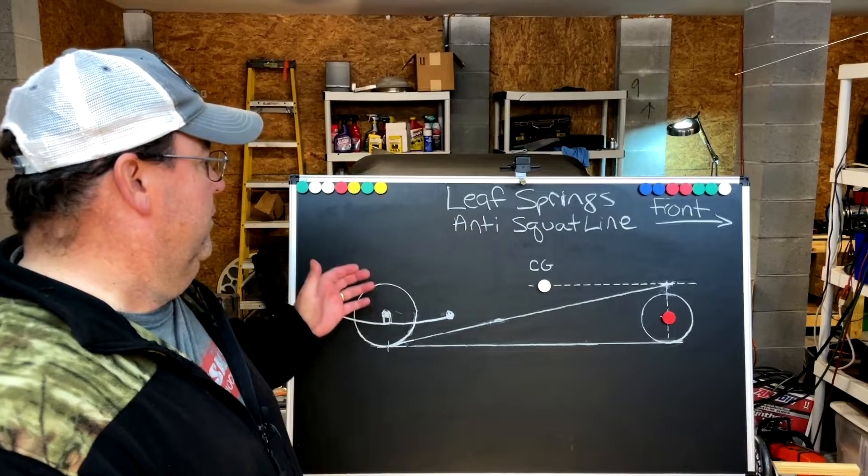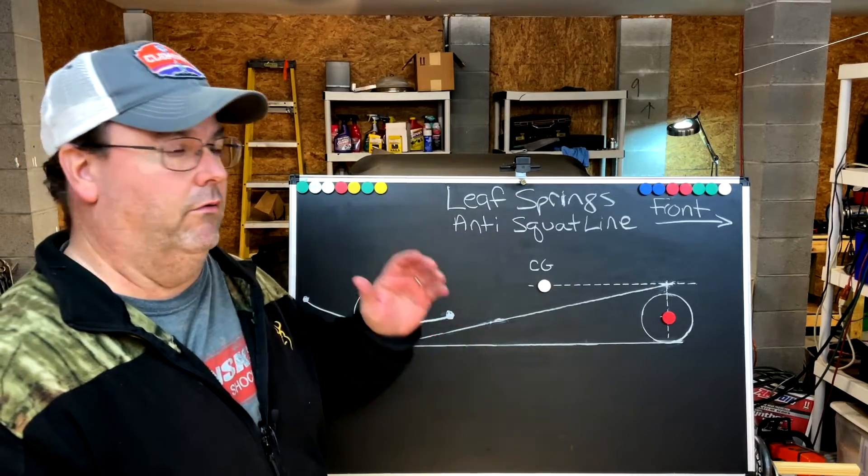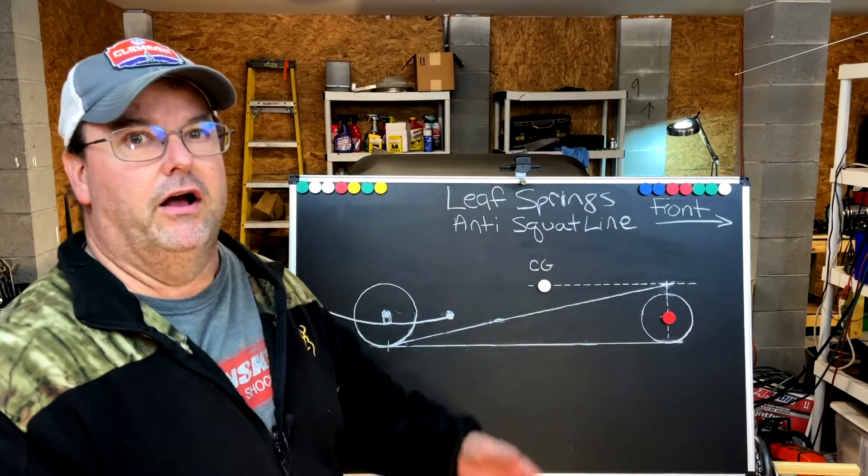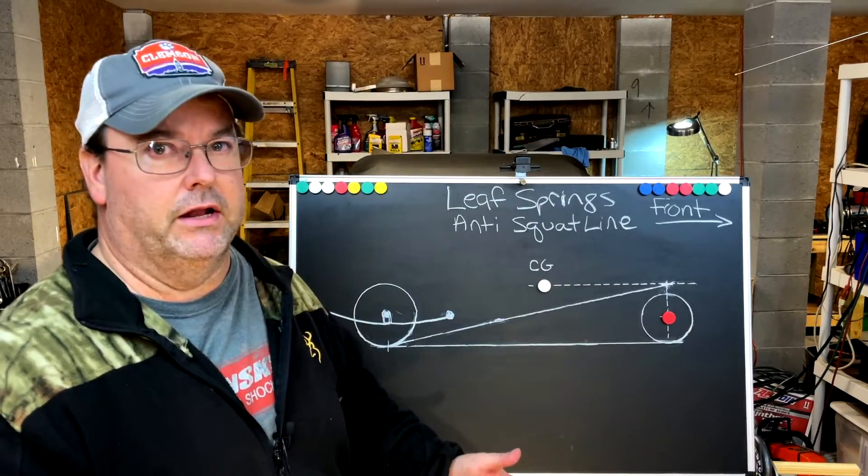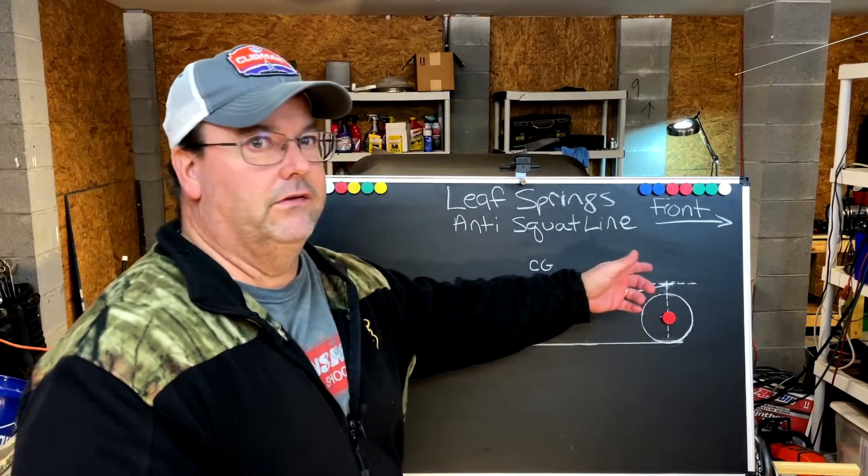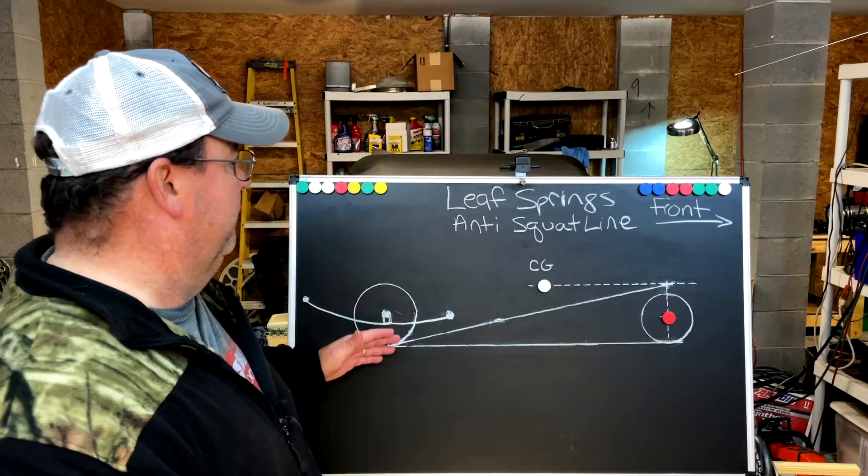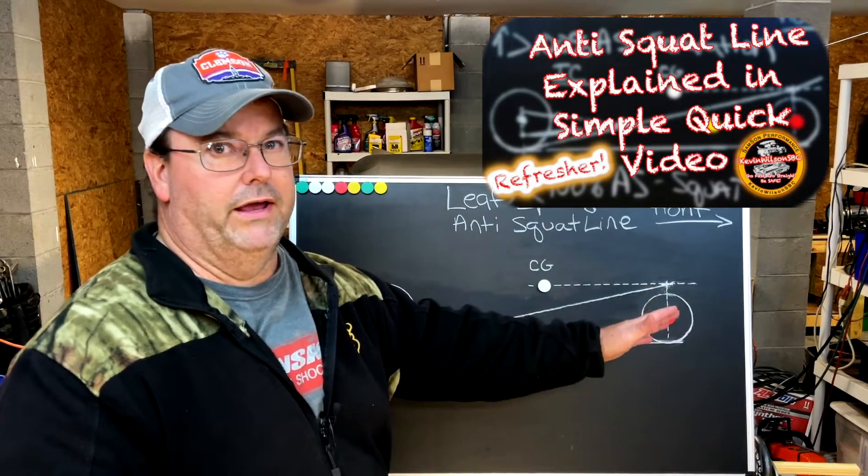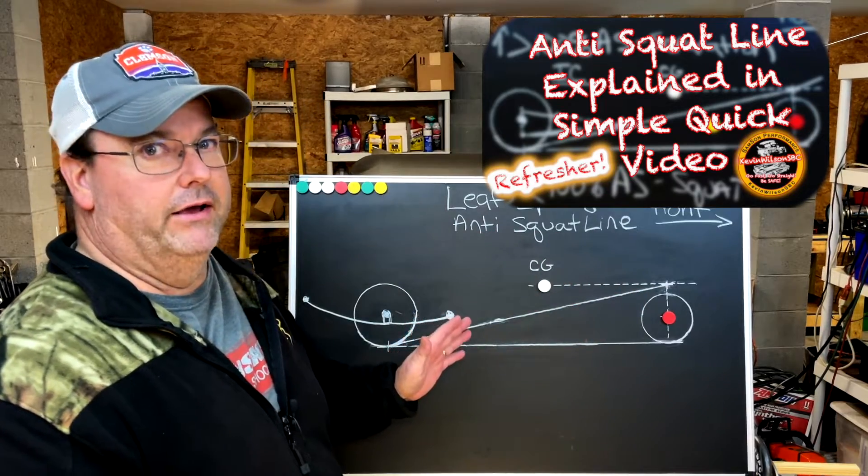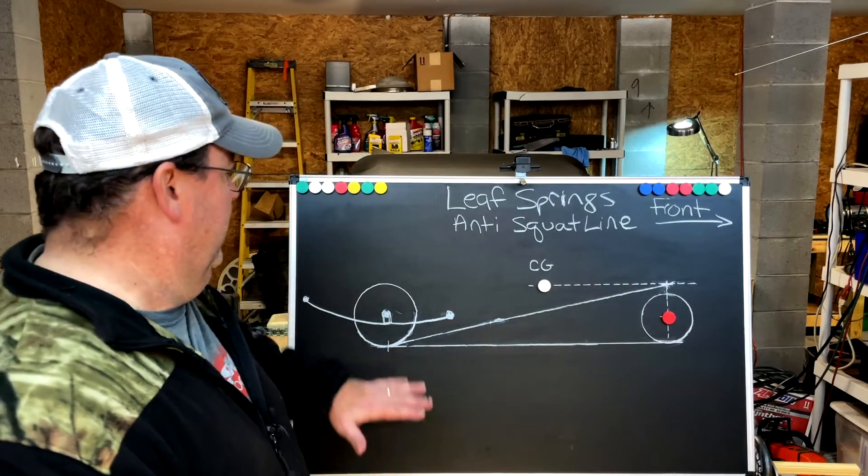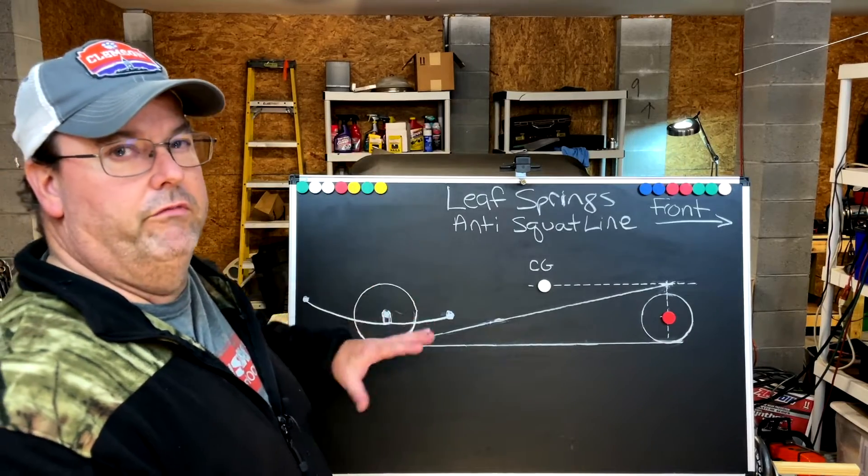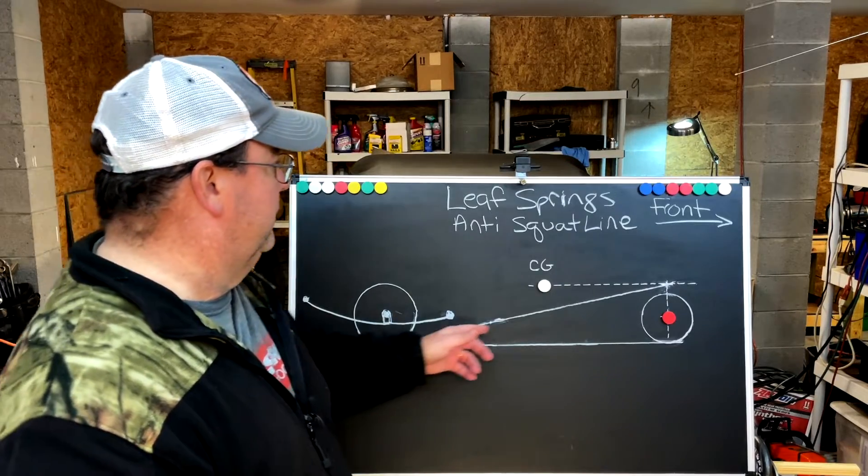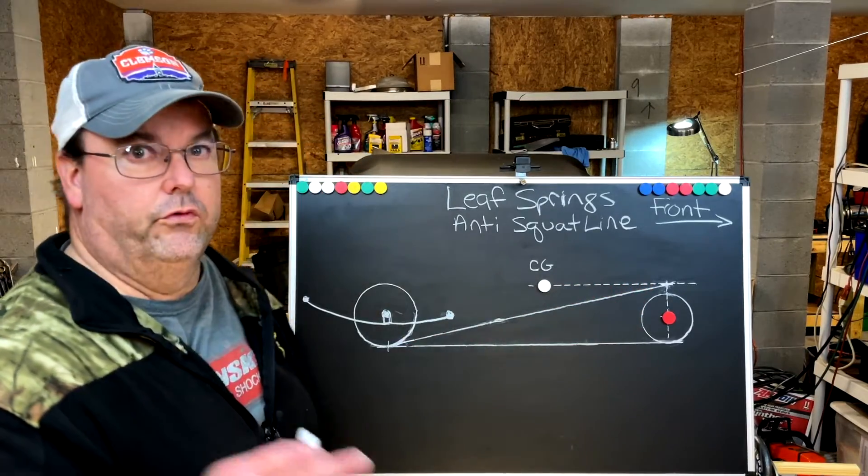Let's talk about leaf springs and how the leaf spring interacts with the anti-squat line. First of all, if you're running leaf springs, or 4-link, or ladder bar, or 3-link torque arm, or any other custom 12-link rear end, you draw the anti-squat line the same. The anti-squat line is the relationship of your car's front to rear wheelbase, weight bias, and the height of your center of gravity. It has nothing to do with what rear suspension or chassis setup you have for drag racing.